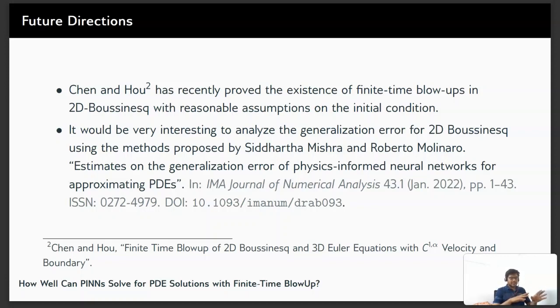2D Boussinesq has a very well-known connection to 3D Euler. So if you can find a blow-up there, there is a good chance there is a blow-up in 3D Euler which is quite interesting. And it's not exactly as obvious as we saw in Burgers' that it blows up. We don't know for 2D Boussinesq if it blows up or not. We don't have an exact solution for it.